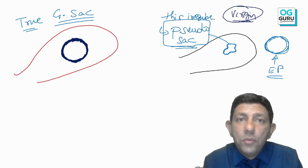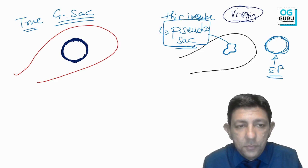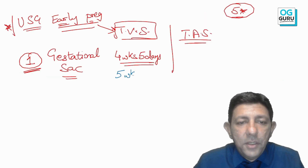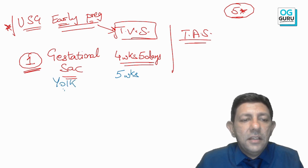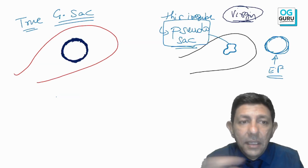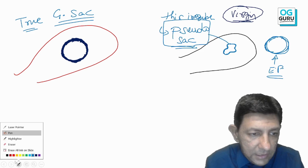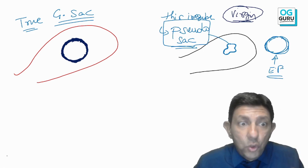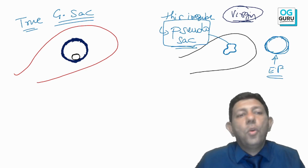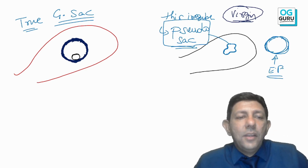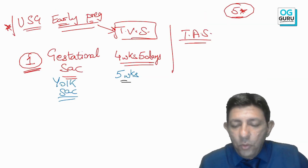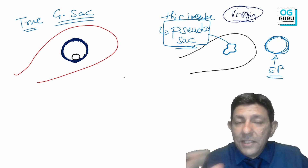After the gestational sac, when the patient reaches around five weeks, we see the yolk sac. The yolk sac appears as a smaller circle inside the gestational sac — a circle within a circle. The yolk sac is where the baby gets its nutrition in early pregnancy.